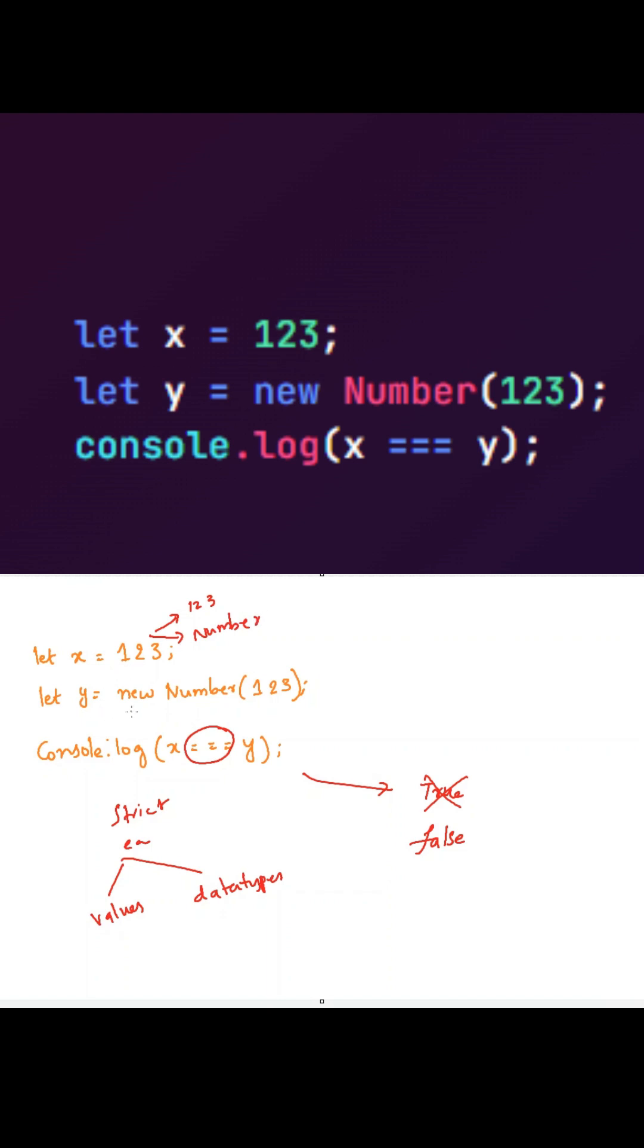Whereas here, we are creating the number by using the new Number constructor. The new Number will create a number object which holds the value of 123.